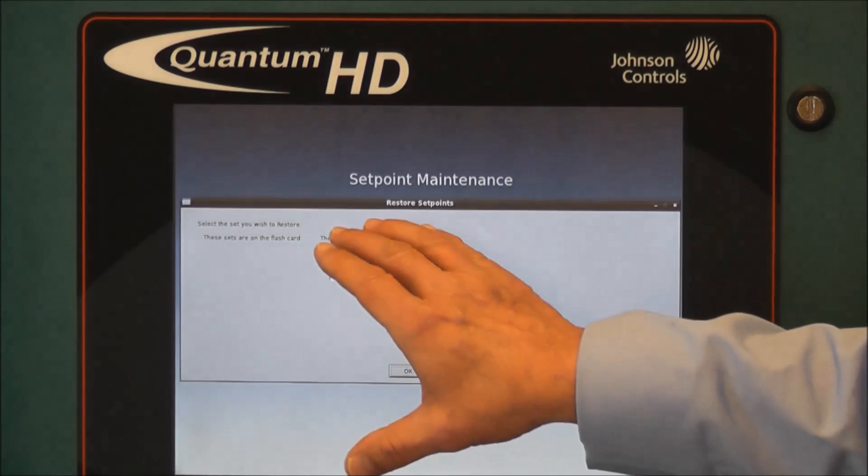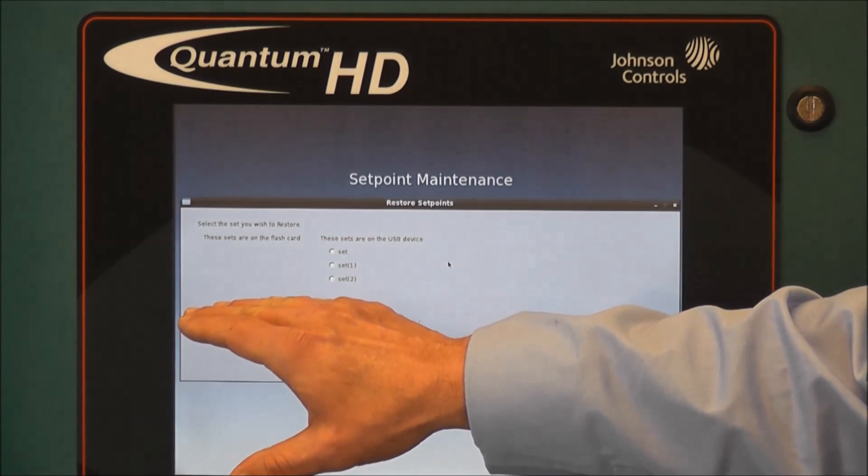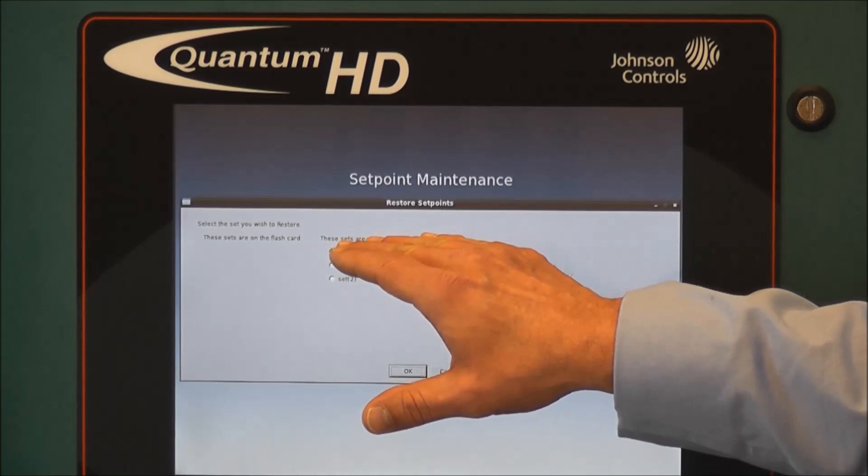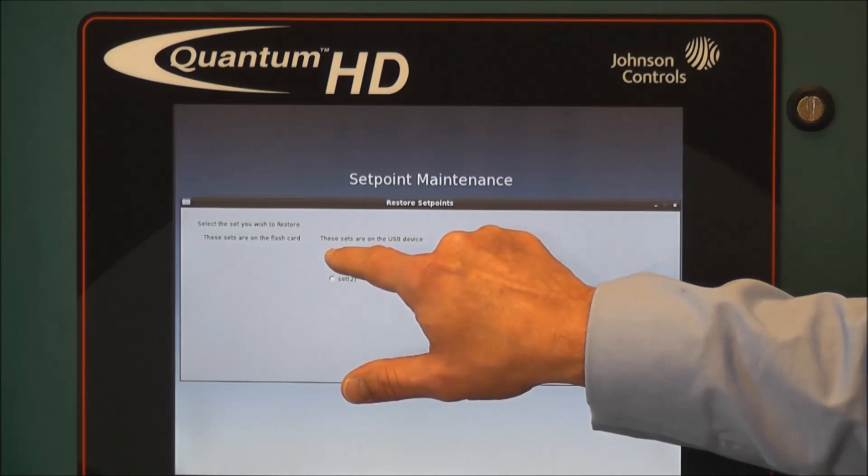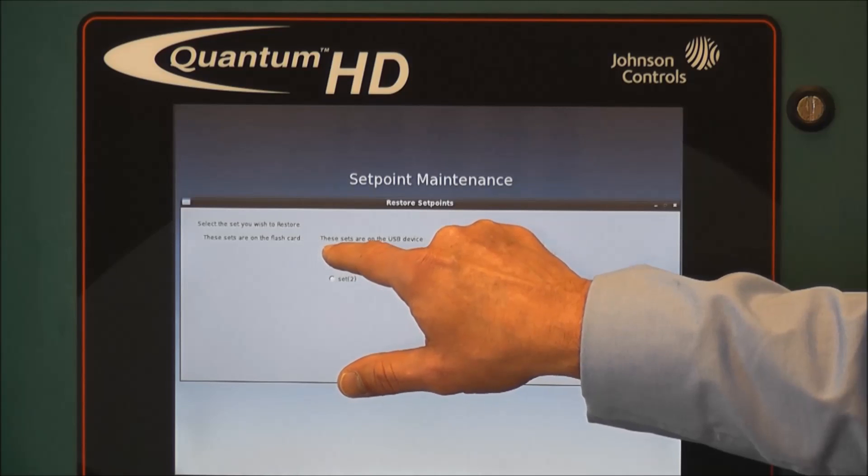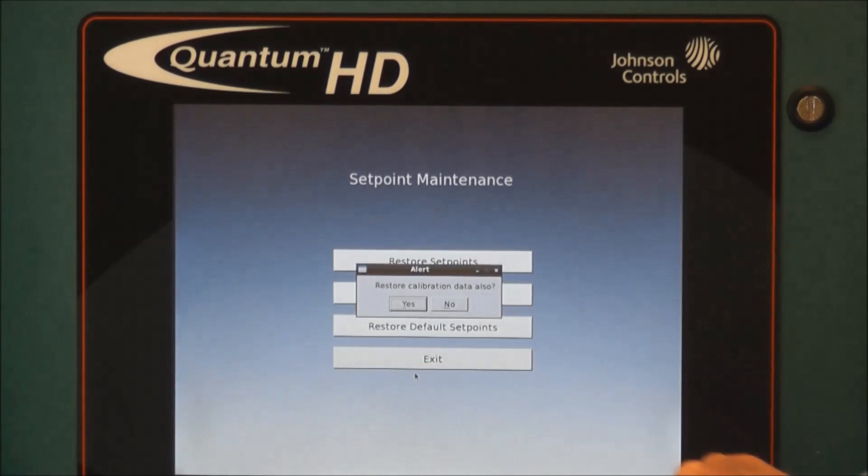The next thing you'll see is it will give you a list of the setpoints that you saved either to the operating software flash card or setpoints that were saved to the USB thumb drive. And for our purposes, we named our set of setpoints just simply 'set'. So we'll select that as a radio button and then press OK.